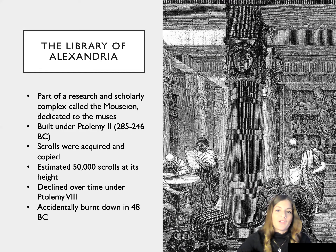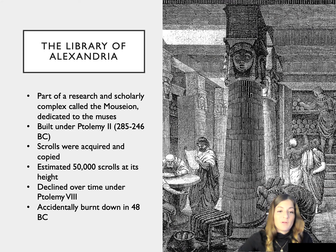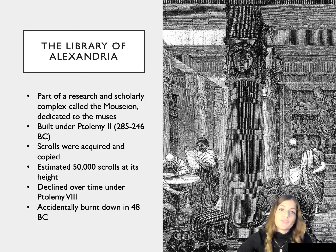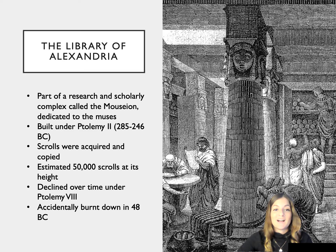This leads us to the broader scholarly tradition of examining written work that reached its height in Alexandria, and more specifically in the Library of Alexandria. The library was part of a large research complex in the metropolitan city of Alexandria. The complex, called the Museon, was dedicated to the muses of art and the pursuit of knowledge. The library itself was built under Ptolemy II, who pursued a policy of collecting every literary text he could get his royal hands on, and requiring those texts to be copied out and kept at the library. At its height, the library is estimated to have contained around 50,000 scrolls, though the number could be higher.